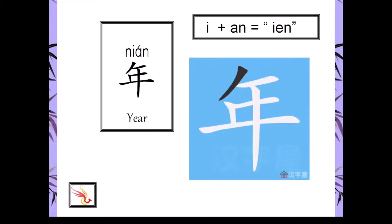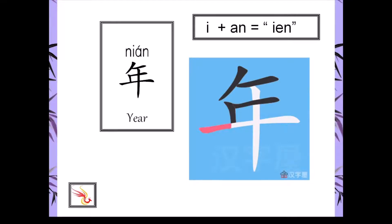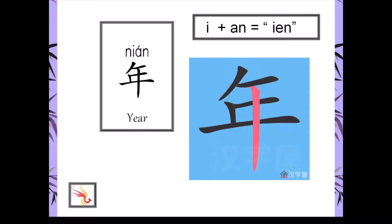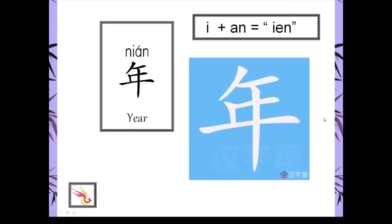Yi, er, san, si, wu, liu... nián. These are the individual digits used when saying a year in Chinese.